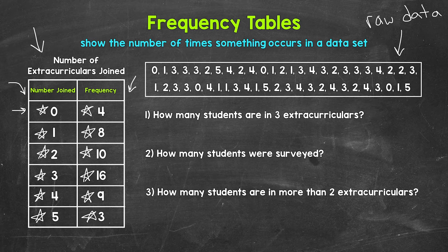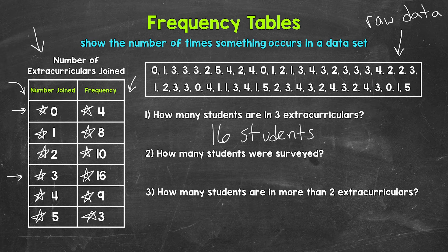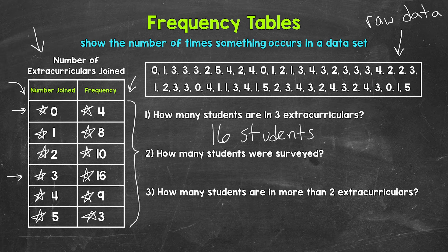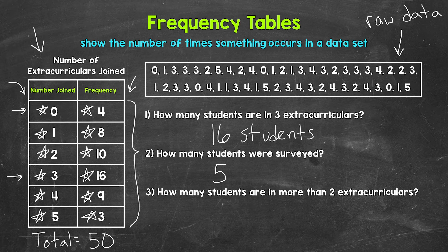Now let's answer some questions regarding the data. Number 1: how many students are in 3 extracurriculars? Looking at 3 extracurriculars joined, there are 16 students. Number 2: how many students were surveyed? We find this by adding all the frequency values: 4 plus 8 plus 10 plus 16 plus 9 plus 3. That gives us 4 plus 8 is 12, plus 10 is 22, plus 16 is 38, plus 9 is 47, plus 3 is 50. So 50 students were surveyed.